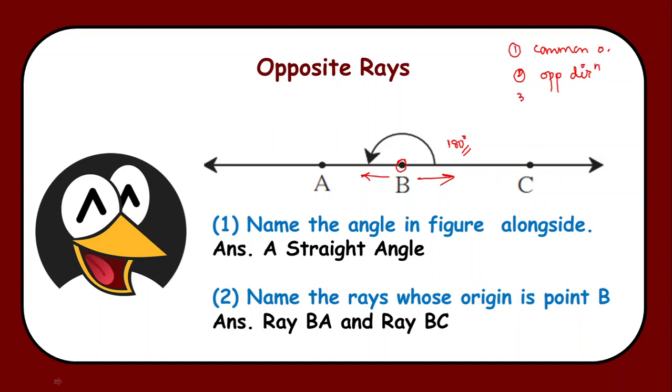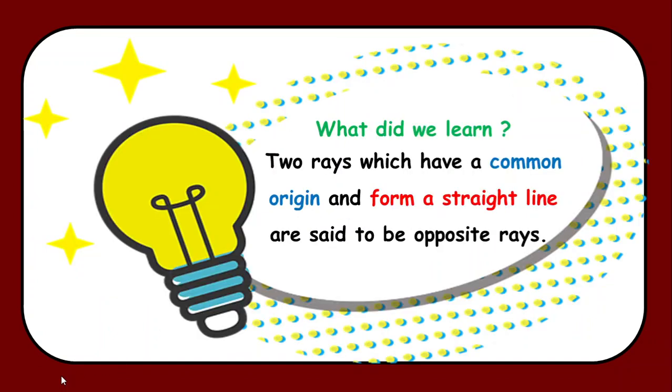And the third thing is what? They make an angle of exactly 180 degrees in between them. So whenever you are able to find two rays which are starting from a common origin and the rays move exactly in opposite direction making an angle of 180 degrees between them, you can say that they are opposite rays.